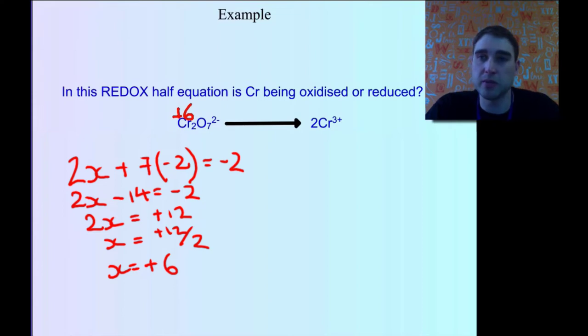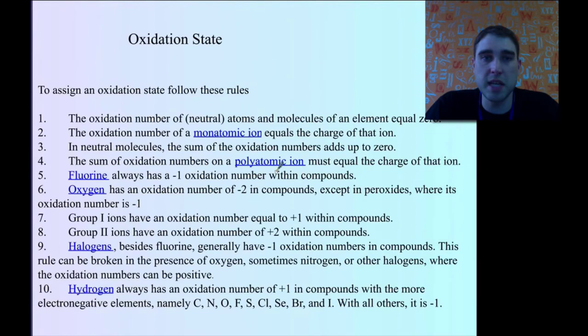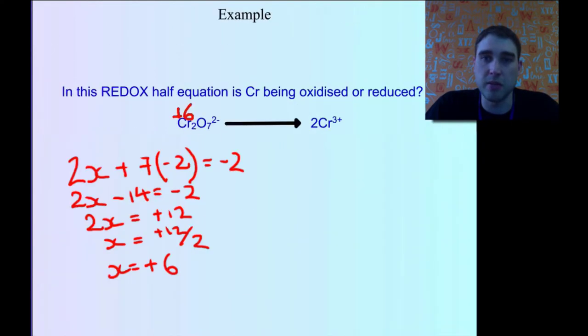If we have a look on this side, we're going to go back to one of our rules from earlier. The oxidation number of a monatomic ion equals the charge of that ion. So the charge of the chromium ion here is plus 3, so the oxidation number is simply plus 3.